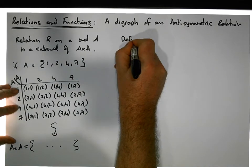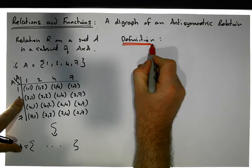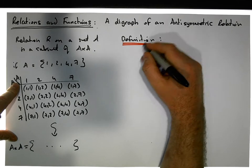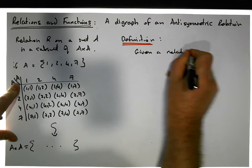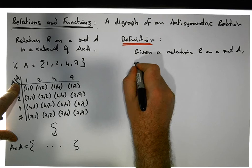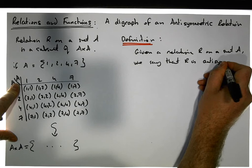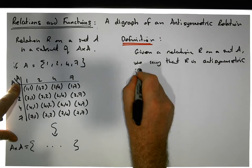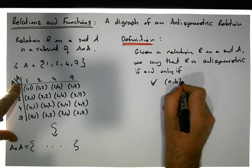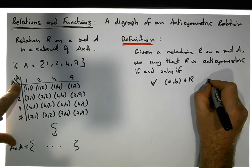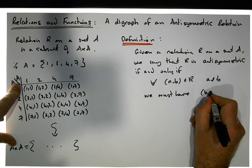Definition of anti-symmetric: given a relation R on a set A, we say that R is anti-symmetric if and only if for each and every ordered pair (a, b) that is in the relation, where a is not equal to b, we must have that (b, a) is not in the relation.